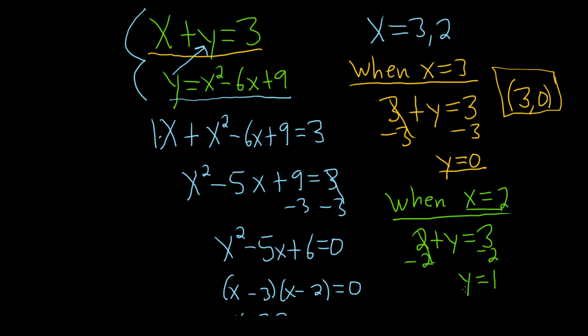So when x is 2, y is 1. That gives us the next ordered pair. So 2 comma 1. So both of these would be solutions to the system of equations.